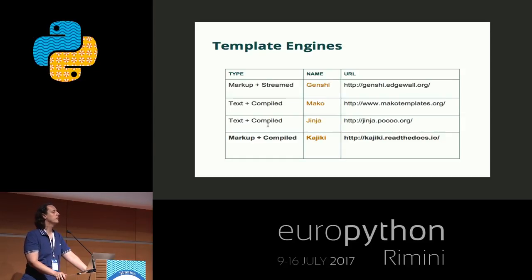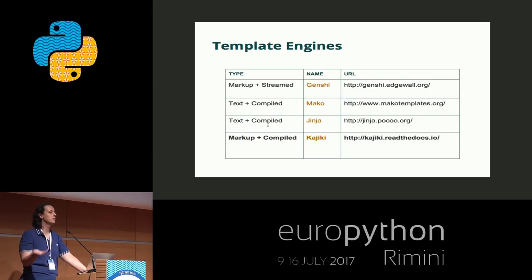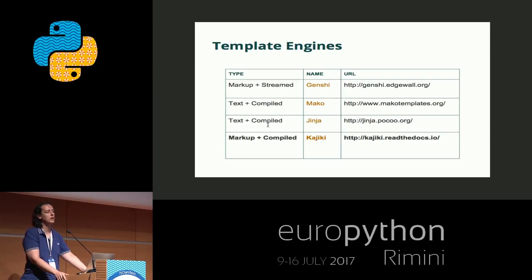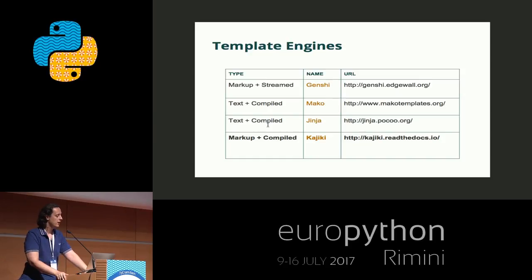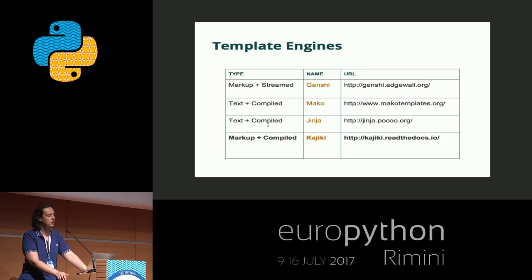For example, if you ever use Jinja, you can actually write practically everything inside the Jinja template. It doesn't really have to be valid markup in any way. As far as the template is able to understand the structure of your code, it's fine. You can even use that for JSON or whatever you want. And then there are the text markup templates, and then the way they actually run the template itself, which might be compiled or streamed.